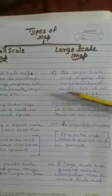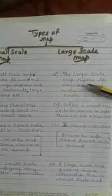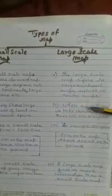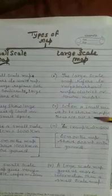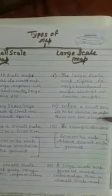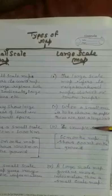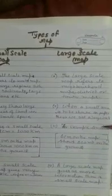If we will compare this small scale map to a large scale map, this large scale map refers to neighborhood maps, district or a town. When a small area is to be shown on paper, then we use a large scale. For example, 6 cm shows here 600 m. A large scale map gives us more information than a small scale map.